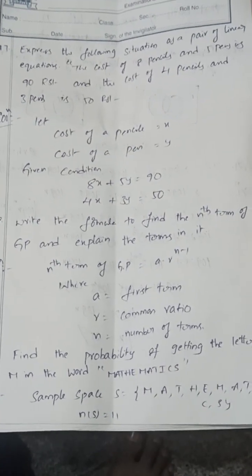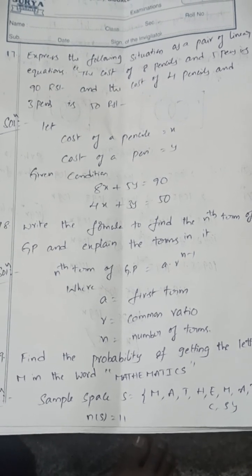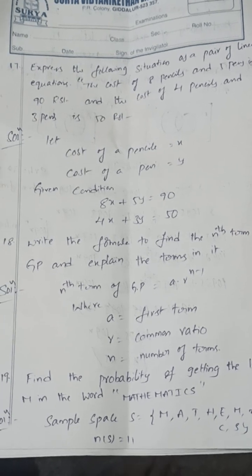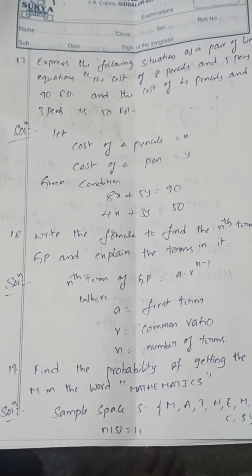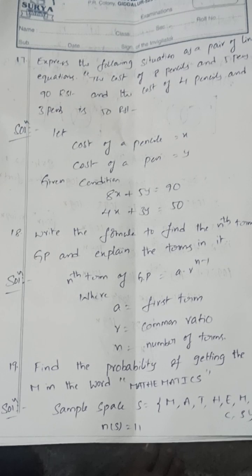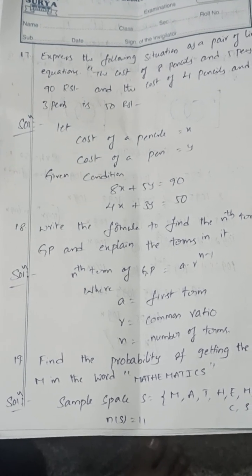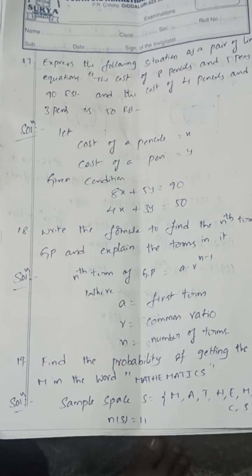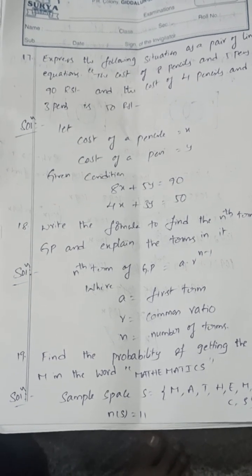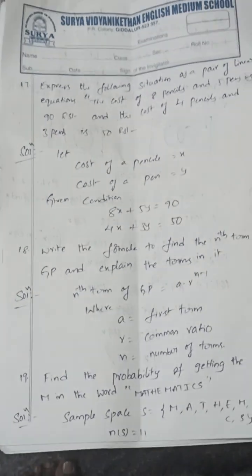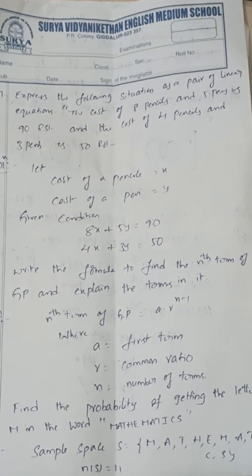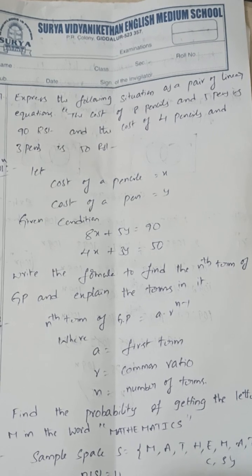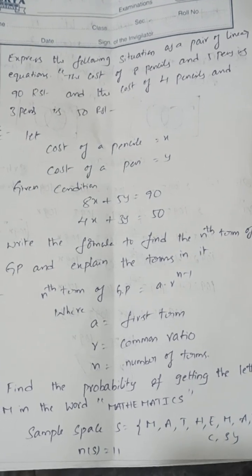Express the following situation as a pair of linear equations: the cost of 8 pencils and 5 pens is 90 rupees, and the cost of 4 pencils and 3 pens is 50 rupees. Let cost of a pencil = x and cost of a pen = y. The equations are: 8x + 5y = 90 and 4x + 3y = 50.